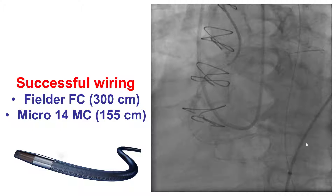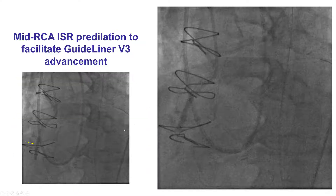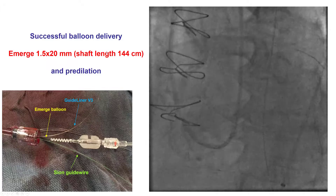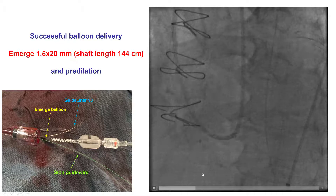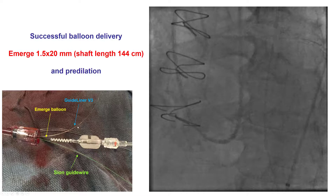Wiring all the way to that lesion was challenging but was achieved using the longest available microcatheter, which is the Micro14 at 155 cm in length, as well as a polymer-jacketed wire, the Fielder FC. We then stented the mid-RCA, which had some disease, to facilitate advancing a guide catheter extension. We inserted a GuideLiner all the way to the distal right coronary artery.